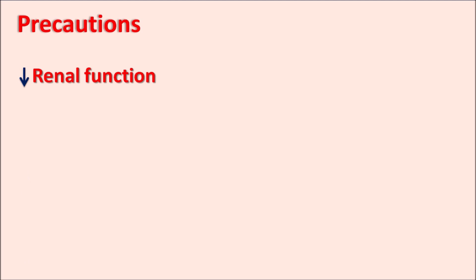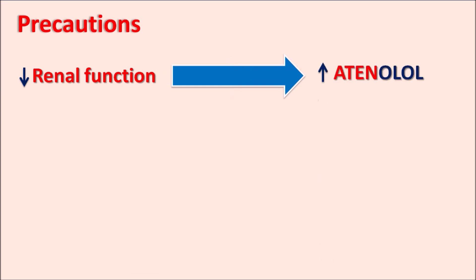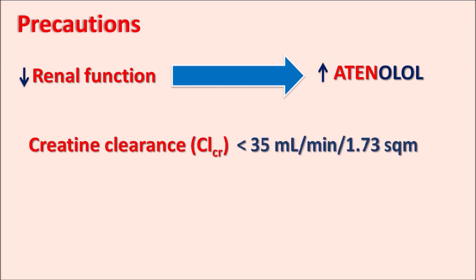Similarly, care should be taken in patients with impaired renal function. In such patients, elevated levels of atenolol can be observed because of decreased excretion. Whenever creatinine clearance is less than 35 ml per minute per 1.73 square meters of body surface area, the atenolol dose should be reduced in order to prevent accumulation of the drug in the body.